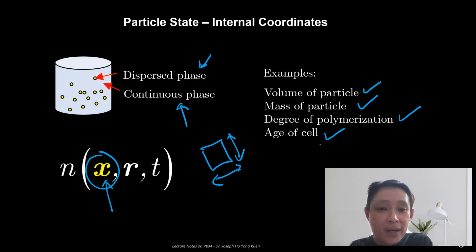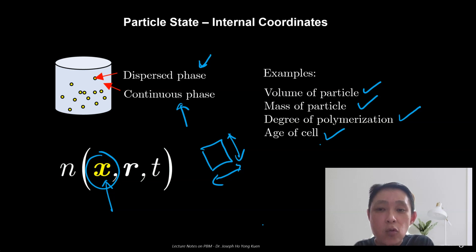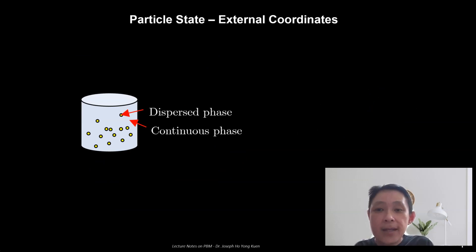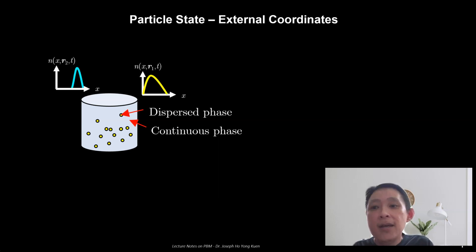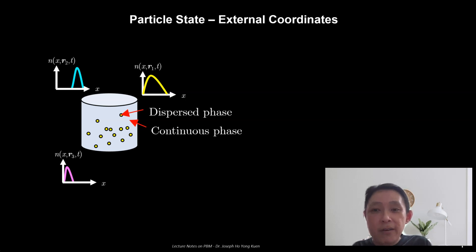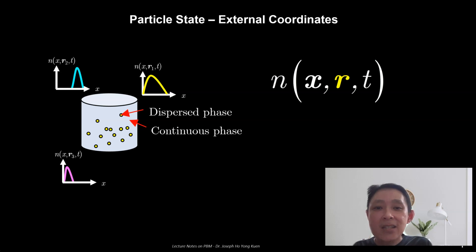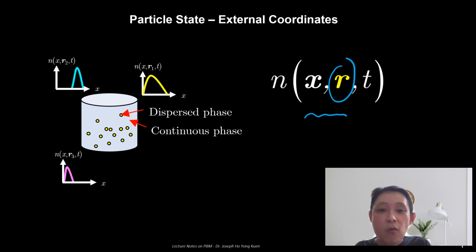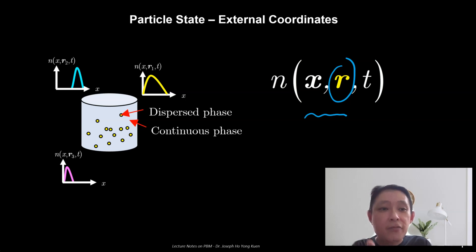The internal coordinate forms part of the particle state because it is one of the pieces of information you need to understand your particle. But that is not all. On top of the internal coordinate, you also need to know where the particle is in the physical space — this is where the external coordinate comes in. When you measure the number density at different locations in the tank, you are most likely going to get different distributions. So generally the number density function is also a function of the external coordinate or physical space r, which is a vector component. Both x and r consist of what we call the particle state.